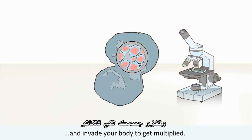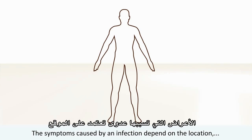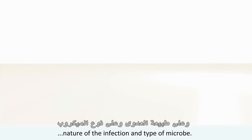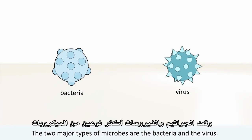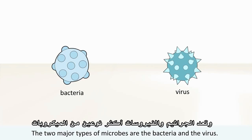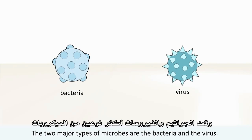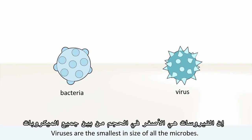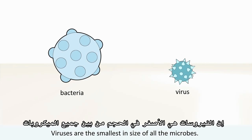The symptoms caused by an infection depend on the location, nature of the infection, and type of the microbe. The two major types of microbes are bacteria and viruses. Viruses are the smallest in size of all the microbes.